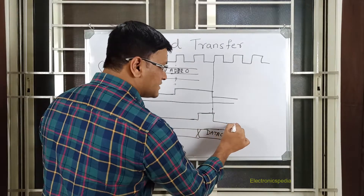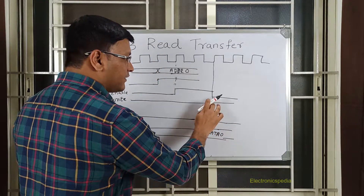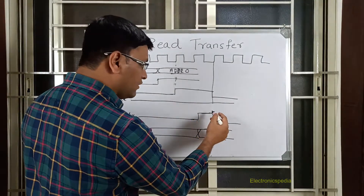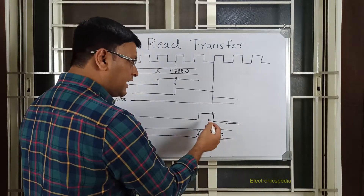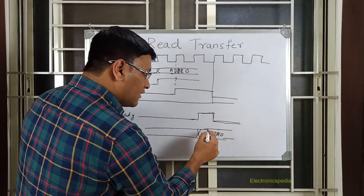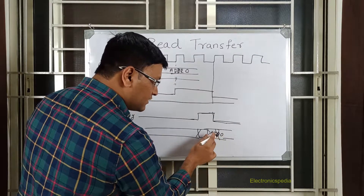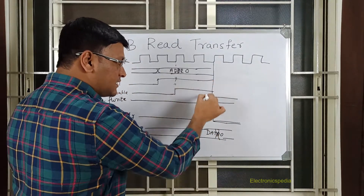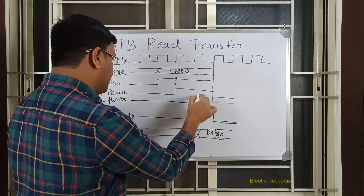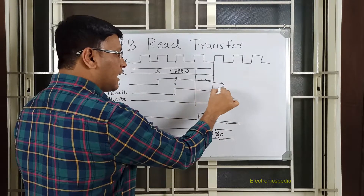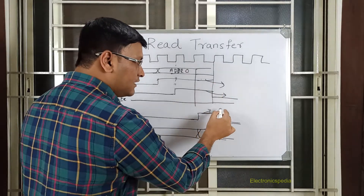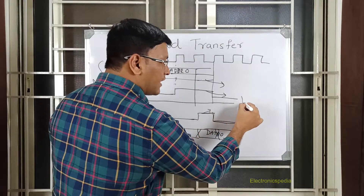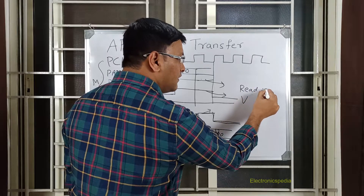If the slave is not implementing an always-ready condition - meaning if the slave is not always ready - then it can choose to assert PREADY low in the next clock cycle. So whatever the data is valid in the window where PREADY, PSEL, and PENABLE are all high - that is the window where the read transaction is a valid transaction.